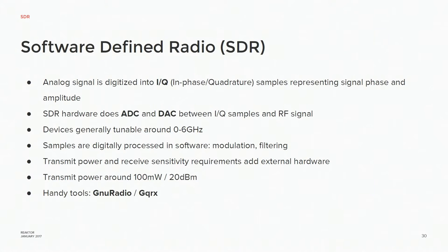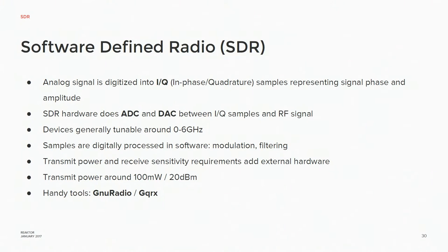This is our development ground station from this summer. It's on top of Mannerheimintie 4 — on top of our office — and we can access it easily from the balcony. You can see a satellite dish for higher frequency communication with our satellite, and three smaller Yagi antennas used for lower frequencies. It also has a motor so you can track the satellite. With SDR, you can do all the signal processing in software so you can reconfigure it easily. The hardware — like the dongle — only translates radio signals to IQ samples and vice versa. The IQ sample basically says what is the phase and amplitude of the signal.